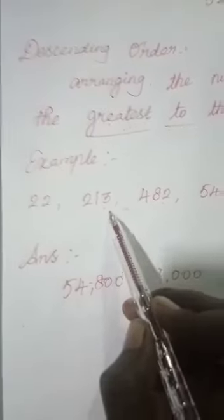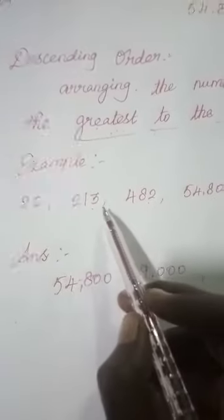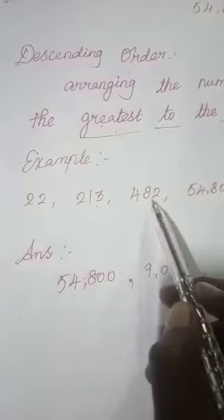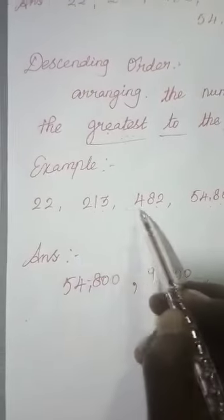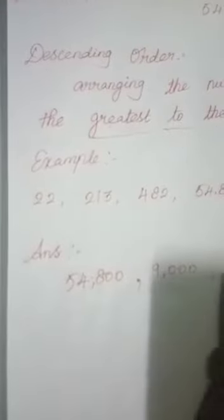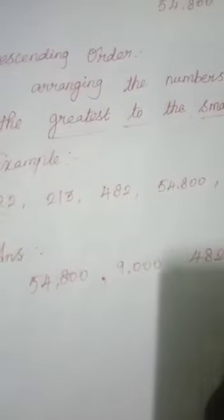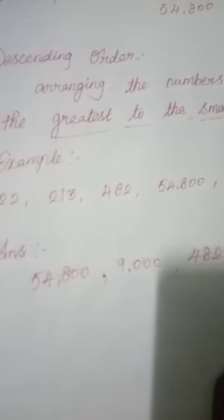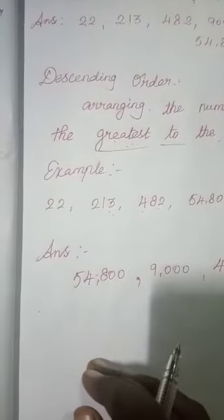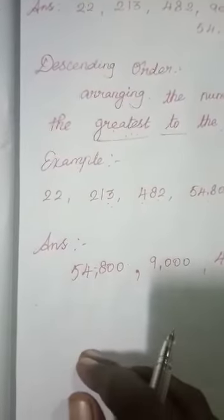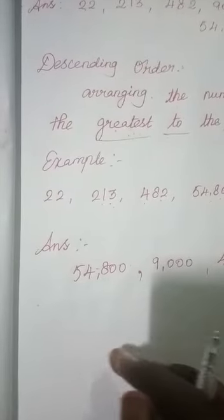Then we look at the three-digit numbers: two hundred and thirteen, and four hundred and eighty-two. We compare the hundreds place — two hundred here, four hundred there. We want the biggest, so I write four hundred and eighty-two first, then two hundred and thirteen. The final number is the two-digit number, twenty-two. Have you understood? Thank you, my dear students.